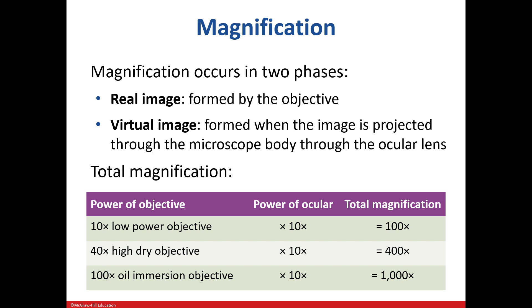Let's discuss magnification. The objective lenses provide the real image, whereas the virtual image comes from the ocular. We can calculate total magnification by multiplying the magnification of the ocular, which is always 10x, by the magnification of the objective lens being used. If you are using the 40x objective lens, the total magnification would be 400x.